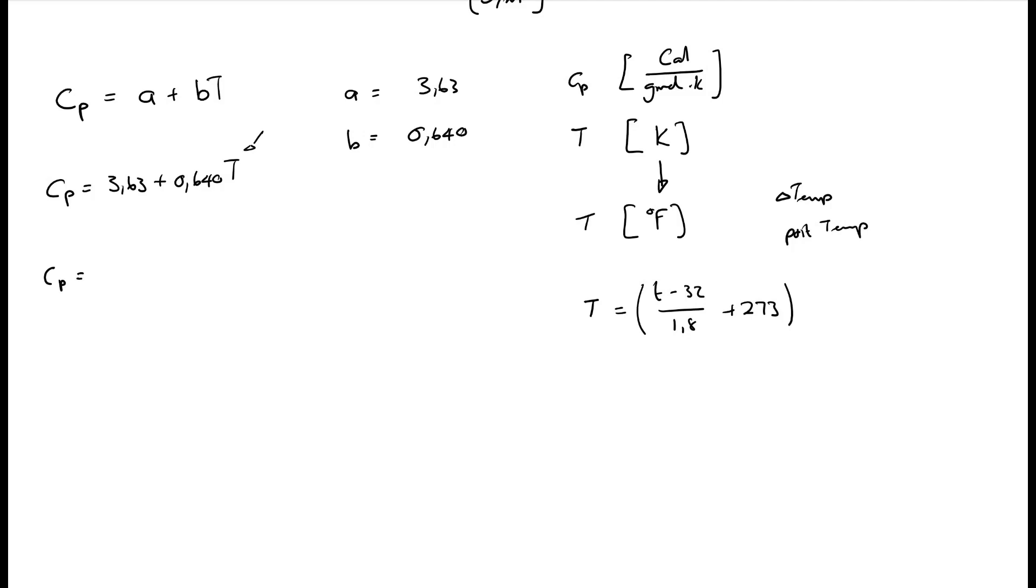This means that CP equals 3.63 plus 0.640 multiplied by that whole thing where I substitute the T for this new value. And guys, I'm not going to do the whole calculation. You are welcome to go do it in your own time. And it will yield 166.97 plus 0.35556 T. But remember, in this equation, CP is still in per degrees Kelvin. Can I convert that per degrees Kelvin so that my CP will actually be in calories per gram mole degrees Fahrenheit? And the answer is yes. Remember what I said earlier. These two constants should have units.